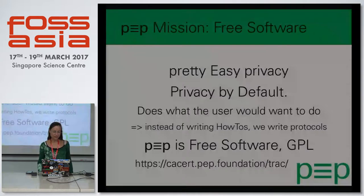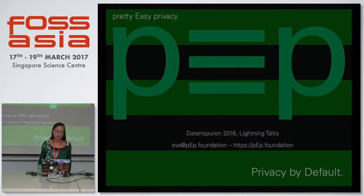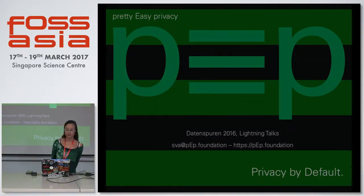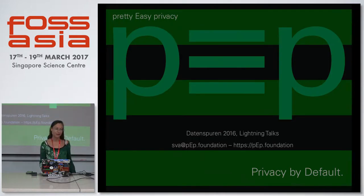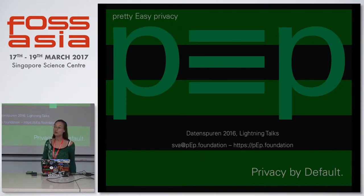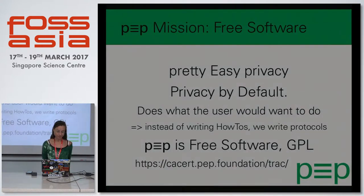This is about PEP — Pretty Easy Privacy. It comes from Pretty Good Privacy and it wants to make privacy the default out there. We want to do mass encryption against mass surveillance. We are on a mission doing mass encryption.